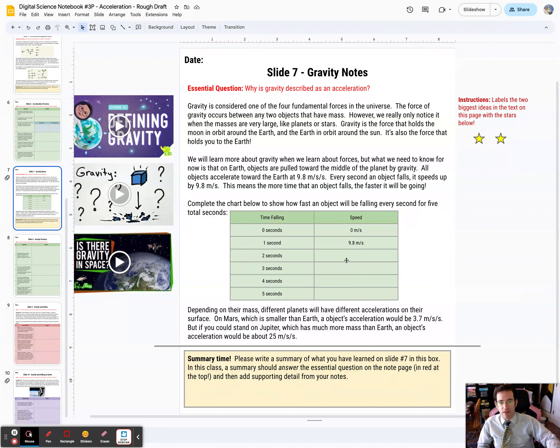Most important thing is to read through the text and complete the table. Once you're done, you get to write a little summary all about gravity, which should answer the essential question, why is gravity described as an acceleration? So why do we describe it that way?